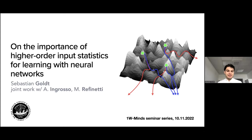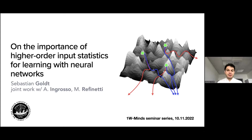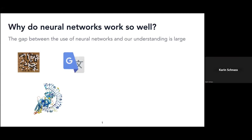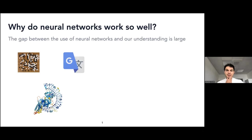Thank you for the very nice introduction and for inviting me. I looked a little bit through the previous talks and it looks like a really cool series. What I'm going to talk about is, broadly speaking, theory of neural networks, and as Karen mentioned, I come from statistical physics so my approach is heavily influenced by that background. This is an online talk so I'd like to make it as interactive as possible — just unmute yourself and speak up if you have questions. You can also type in the chat and Karen will raise the voice for you if there's trouble with audio.